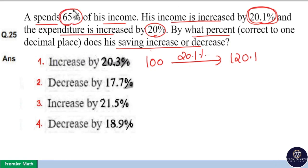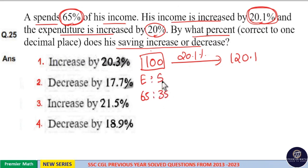Now, initially he spent 65% of his income. Initially, his income was 100 rupees. Out of this 100, he spent, that is his expenditure was 65 rupees. Then, the remaining 35 rupees is his savings.